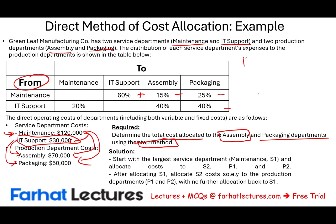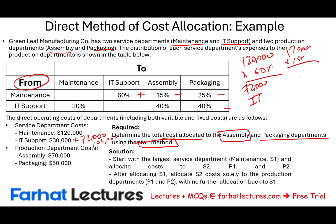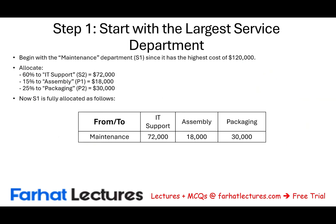The maintenance department has $120,000. We allocate 60% of that to IT: 60% × $120,000 = $72,000, which is added to IT. So IT now has $30,000 initially plus $72,000 allocated = $102,000. We allocate 15% × $120,000 = $18,000 to assembly, and 25% × $120,000 = $30,000 to packaging. IT gets $72,000, assembly gets $18,000, and packaging gets $30,000.